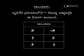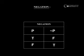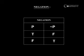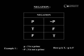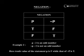Example 1: P — '3 is a prime.' Negation of p — '3 is not a prime.' Here p is true, and the negation of p is false.